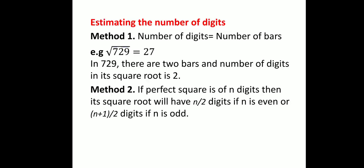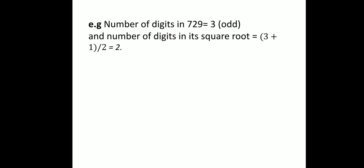Now, how to estimate the number of digits in the square root of a number? First method: the number of digits equals the number of bars. For example, placing bars on 729 gives 2 bars, and its square root is 27, which has 2 digits. Method 2: if a perfect square has n digits, then its square root will have n/2 digits if n is even, or (n+1)/2 digits if n is odd. For example, 729 has 3 digits, which is odd, so its square root has (3+1)/2 = 4/2 = 2 digits.